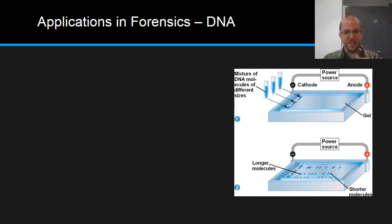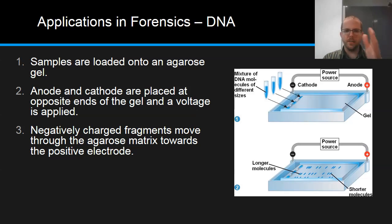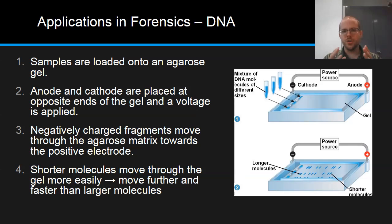You can see an example kind of setup in the image on the right, where we would put a mixture of DNA fragments of different sizes up towards the negatively charged electrode, and they will be repelled by that electrode and attracted towards the positively charged electrode, separating out as they go. We load the samples onto the agarose gel at one end. The anode and the cathode are placed at opposite ends of the gel, and then we apply the voltage. The negatively charged fragments move through that matrix, through that thick gel, towards the positive electrode. Now, the shorter molecules or the shorter fragments move through the gel more easily. That is, they move further and faster than larger molecules in that particular time that we would apply it. The reason that that works is that the gel is very tightly packed. There's only really narrow spaces in between the different molecules that make up its structure. And so the size of the particles is really going to affect how quickly and how easily it fits through those spaces.